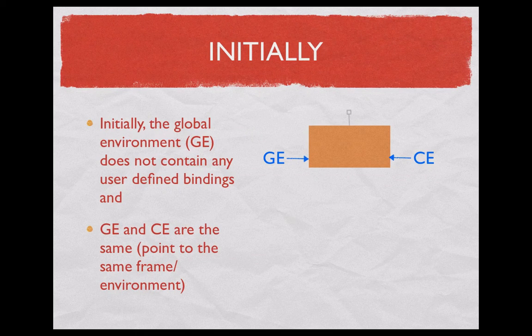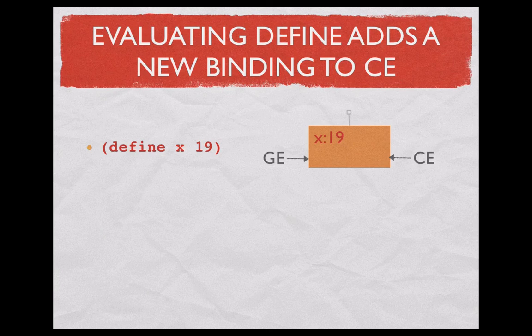So let's start look at these. Initially, we have a global environment which points to a frame which doesn't contain anything we have defined. There are things which are built in, but nothing that the user or the programmer has defined. And as you see, the current environment points to the same place.